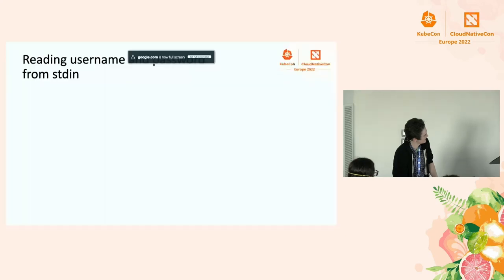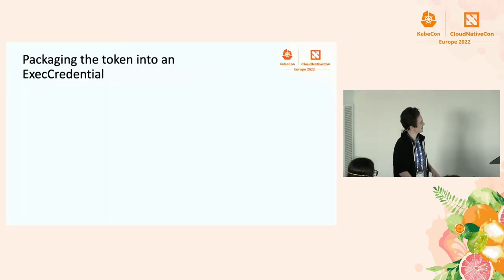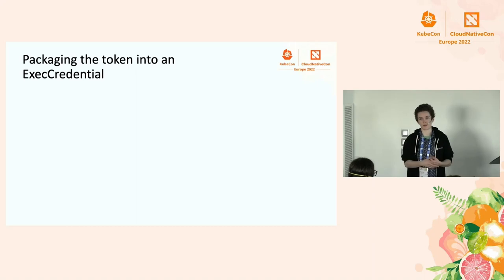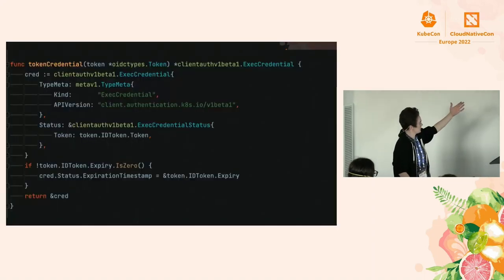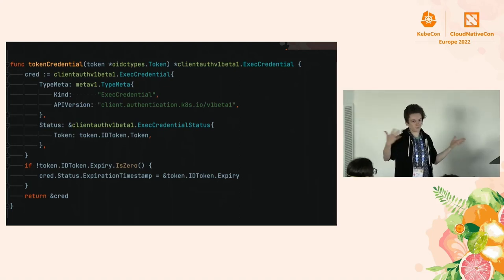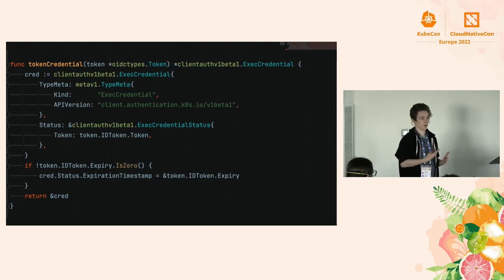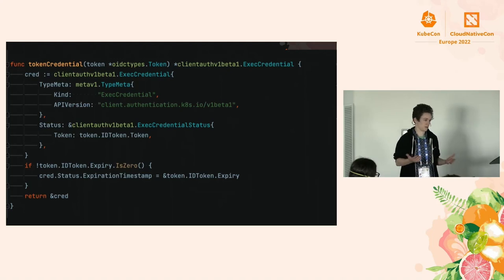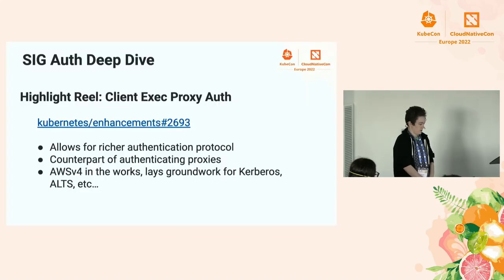The last step is packaging the token into an exec credential, which is the format expected by client-go. Using the client-go libraries, we take the token we received — which is OIDC-specific — serialize it, and send it to standard out. Client-go can then attach it to the request to the API server.